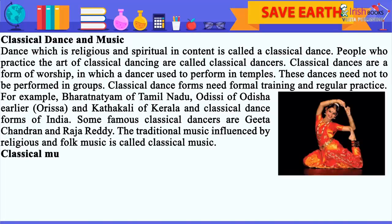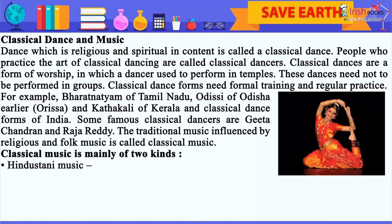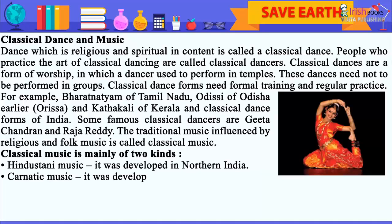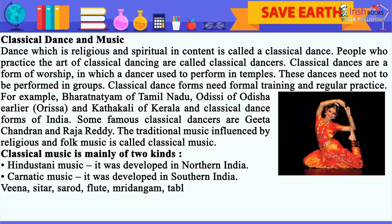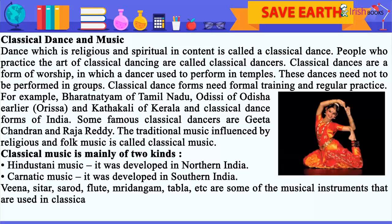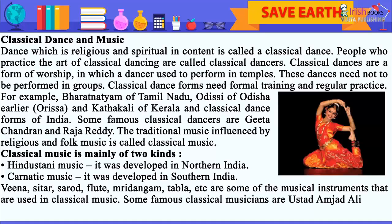The traditional music influenced by religious and folk music is called classical music. Classical music is mainly of two kinds: Hindustani music, developed in Northern India, and Carnatic music, developed in Southern India. Veena, sitar, sarod, flute, mridangam, tabla, etc. are some of the musical instruments used in classical music. Some famous classical musicians are Ustad Amjad Ali Khan and Srimati M.S. Subhalakshmi.